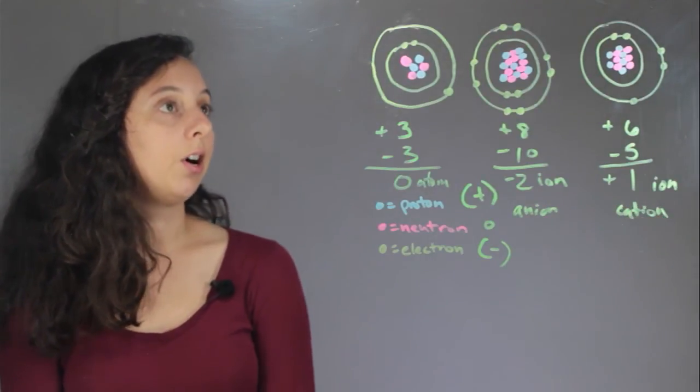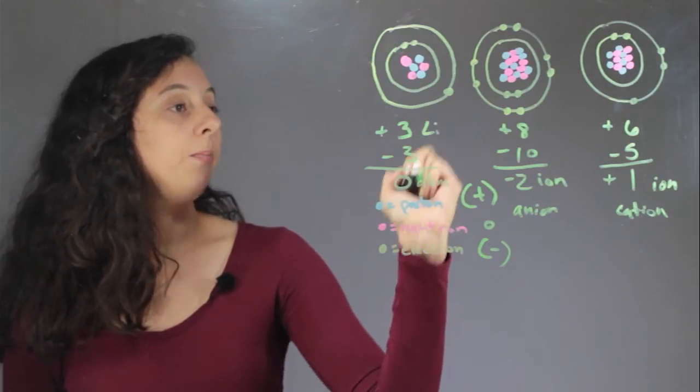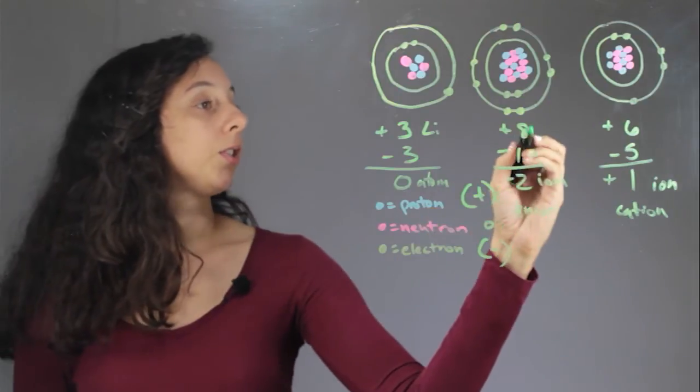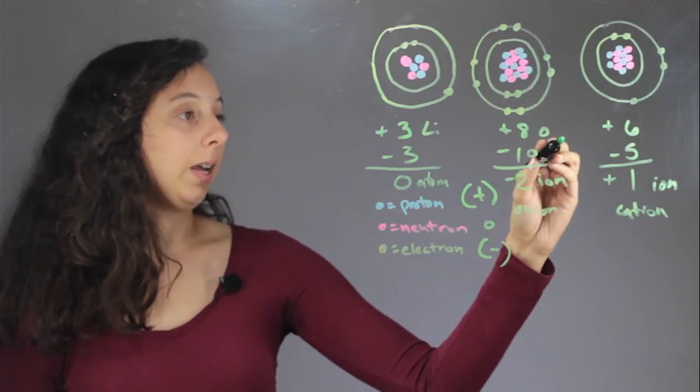And so just for reference, since this had three protons, it's a lithium atom. This had eight protons, so it's an oxygen ion and an oxygen anion at that.